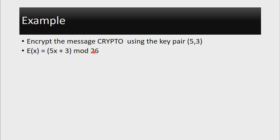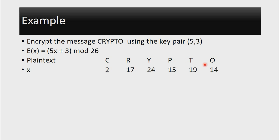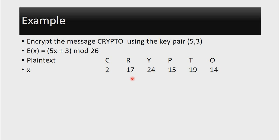The next thing to do is, first of all, write what the plaintext is. So the plaintext is C-R-Y-P-T-O. Then we have to come up with the numerical equivalence of the plaintext. X is simply the numerical equivalence, and if you look at the table, C is 2, R is 17, Y is 24, and so on. So that is how we're encoding based on this table. Now that we have the numerical equivalence, the next thing is to multiply by 5 and add 3. So the next step is 5X + 3, and we do this for each and every term.